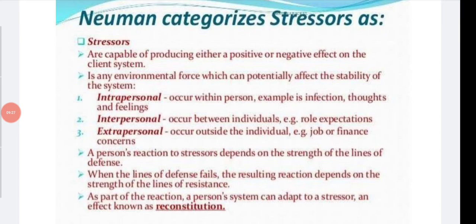Intrapersonal stressors occur within the person — for example, an infection. Interpersonal stressors occur between the individual and environment — for example, role expectations. Extrapersonal stressors occur outside the individual — such as job or financial concerns. As part of the reaction, a person can adapt to a stressor, an effect known as reconstitution, where the body adjusts to the new situation.